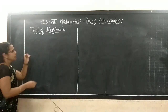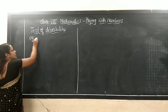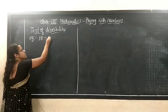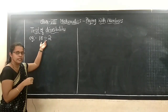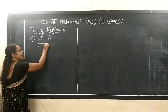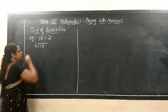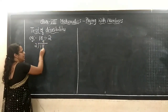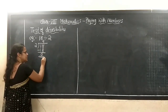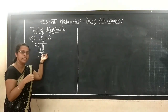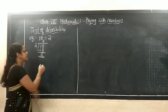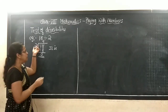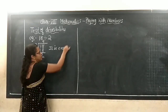If I take the number 18, whether it is divisible by 2 or not — we can divide and see. 18 divided by 2: 2 nines are 18. 18 minus 18 is 0. If the remainder is 0, then it is exactly divisible by 2.